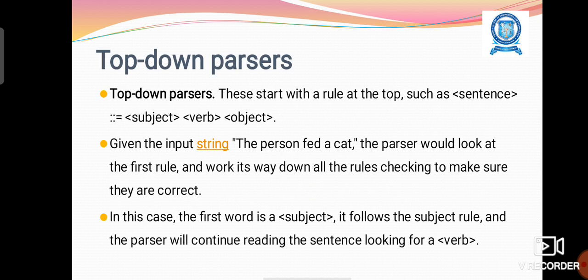The first type of parser is called top-down parser. These start with the rule at the top, such as sentence equal to subject, verb, object. Here the parsing process will start from the top and proceed to the down. Given the input string, the person fed a cat. The parser would work at the first rule and then works its way down all the rules, checking to make sure they are correct.